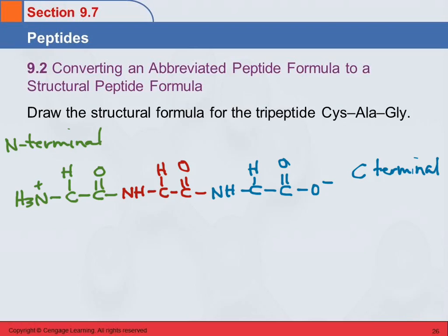So for side chains, for cysteine, C-H2-S-H. I should remember that one. The next one is alanine, which is just a methyl group.